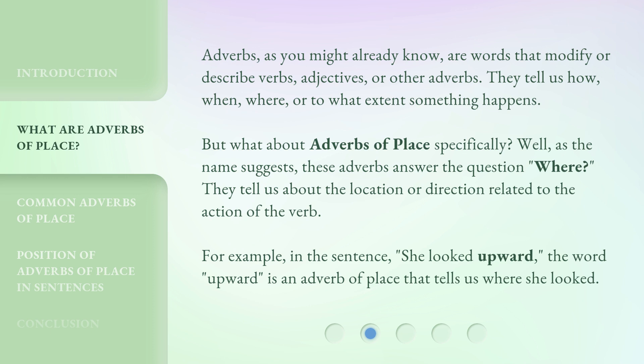Adverbs, as you might already know, are words that modify or describe verbs, adjectives, or other adverbs. They tell us how, when, where, or to what extent something happens. But what about adverbs of place specifically? Well, as the name suggests, these adverbs answer the question: where. They tell us about the location or direction related to the action of the verb.